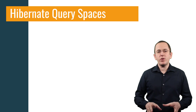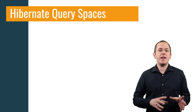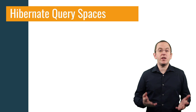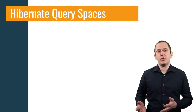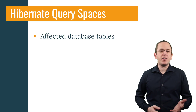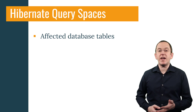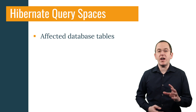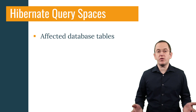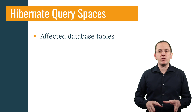The query space also helps Hibernate identify the parts of the second-level cache it needs to invalidate when using a modifying query to implement a bulk operation. Hibernate doesn't know which database records and entity objects are affected by it when you execute such a query. It has to invalidate all objects of an entity class referenced by the query space.